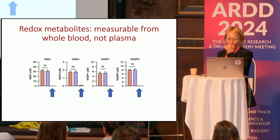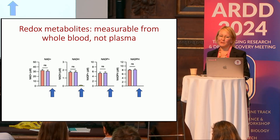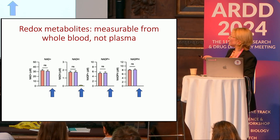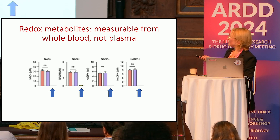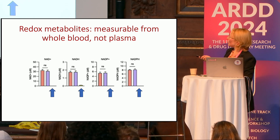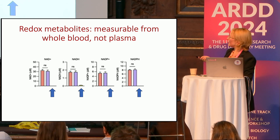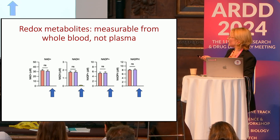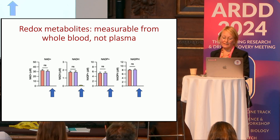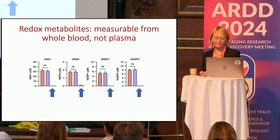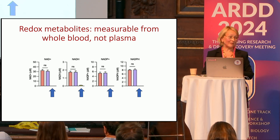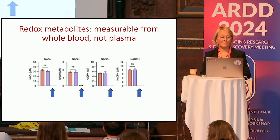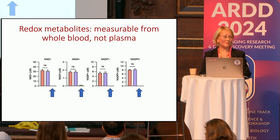One thing we looked at first was the optimal source. In the plasma analysis versus whole blood and cell pellet, you can see that where the arrow shows — that's plasma — there's not really anything to be detected. Yet there are actually methods on the market analyzing NADs from plasma.